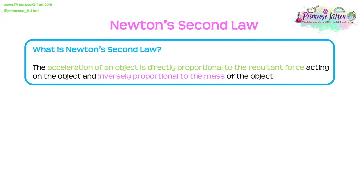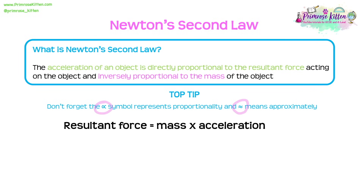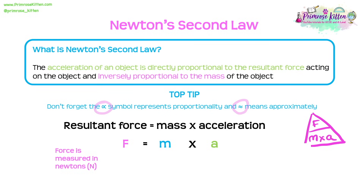Newton's Second Law tells us that the acceleration of an object is directly proportional to the resultant force and inversely proportional to the mass. This gives us the equation: resultant force equals mass times acceleration, or F = ma. Force is measured in newtons, mass in kilograms, and acceleration in metres per second squared.